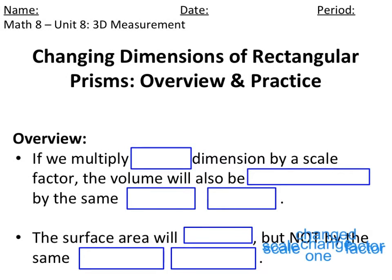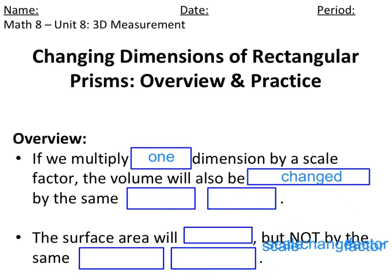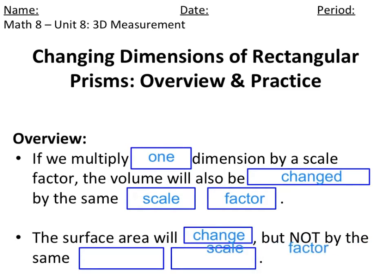Today we are going to learn about changing dimensions of rectangular prisms. Let's first look at the overview. If we multiply one dimension by a scale factor, the volume will also be changed by the same scale factor. The surface area will also change, but not by the same scale factor. So let's look at some examples.